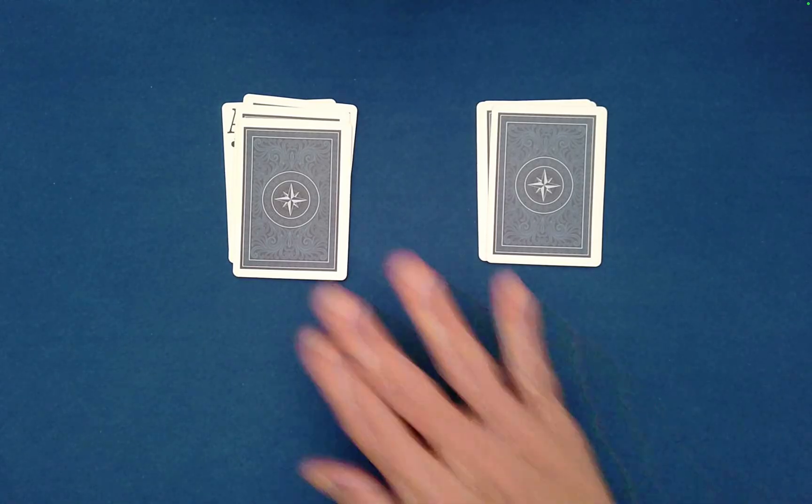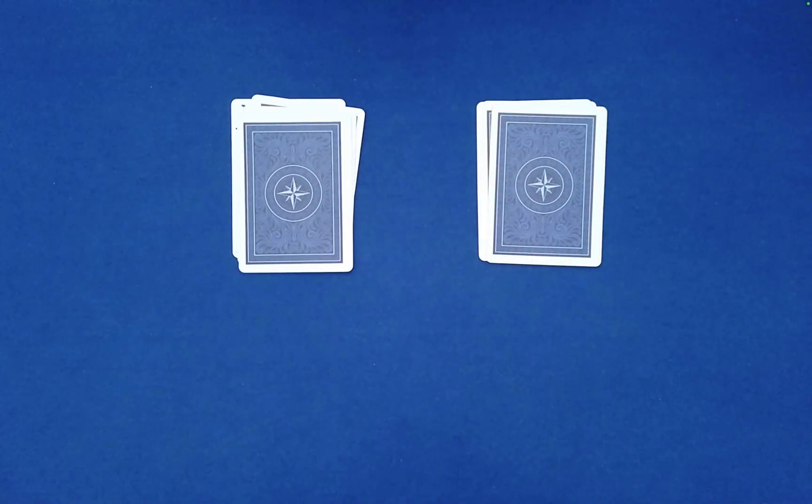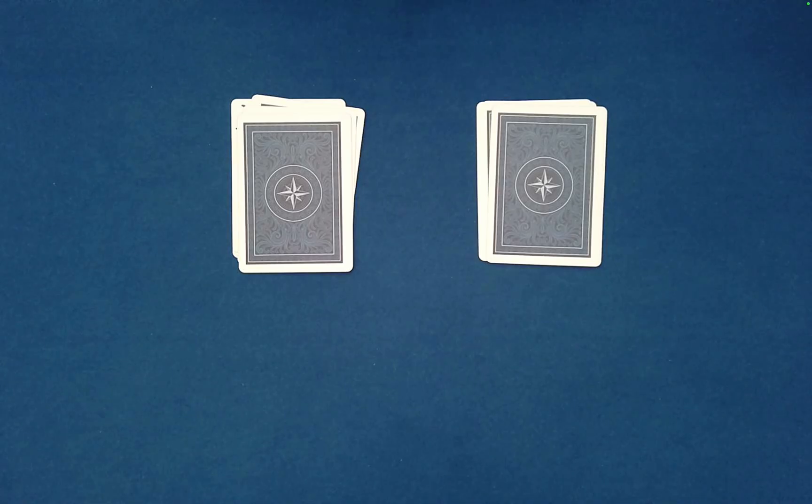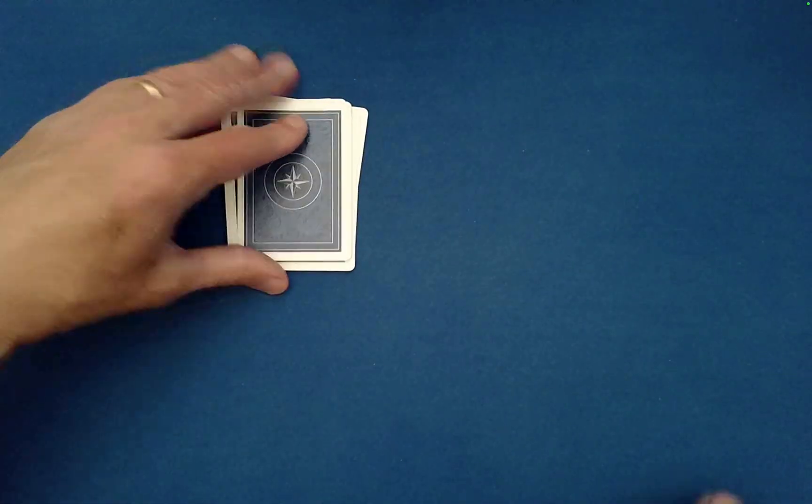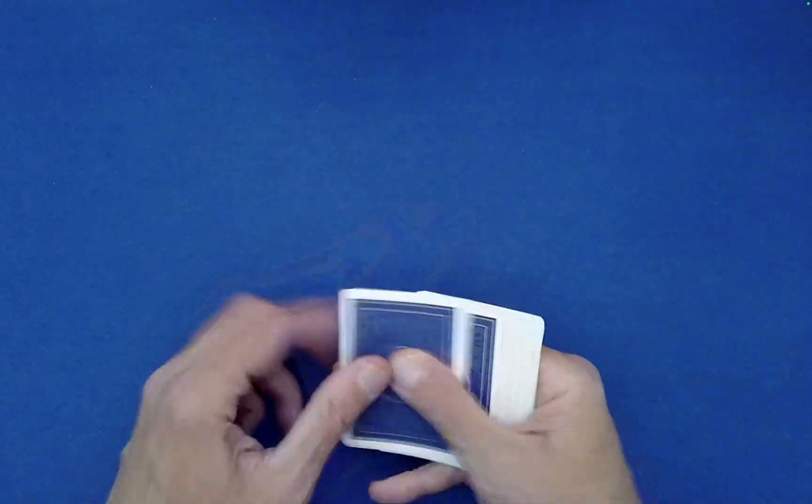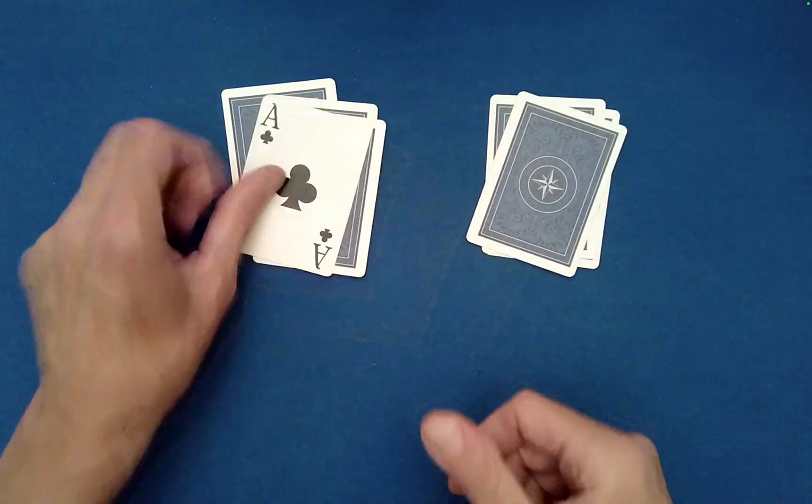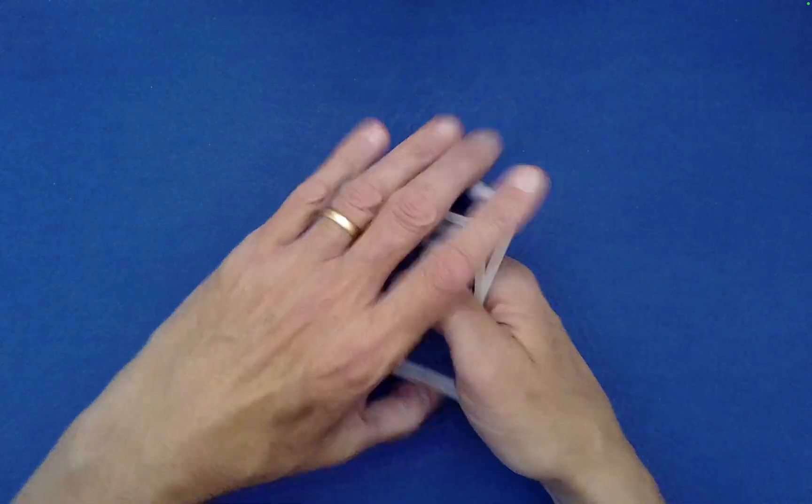So I thought what we would do here is we'll go ahead and always stack the right pile on top of the left. That will enable us—see where the ace is right there—that will enable us to kind of watch the ace move around to verify that those cards are just being scrambled. Okay, so I'll put right on left.